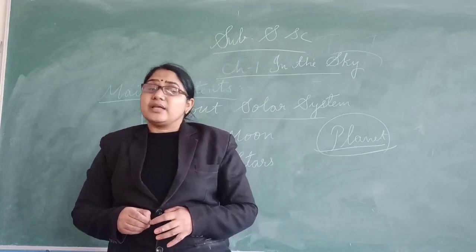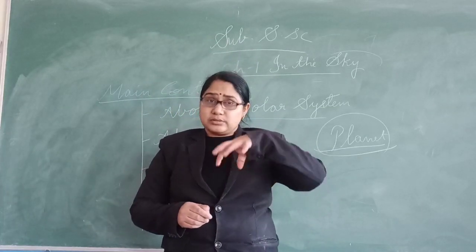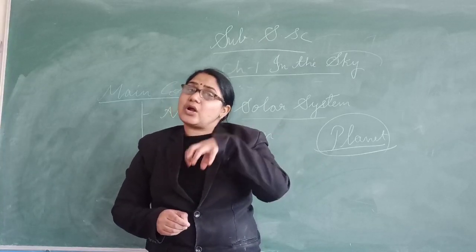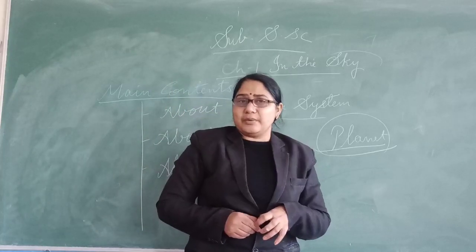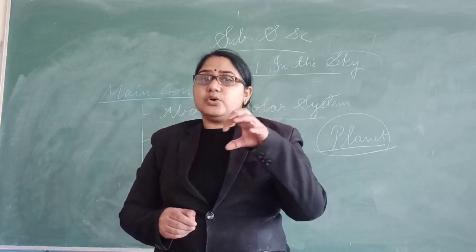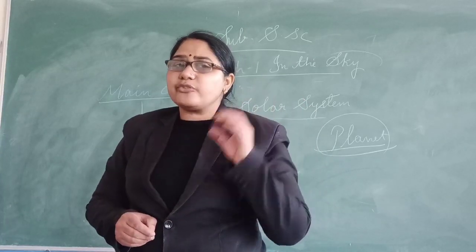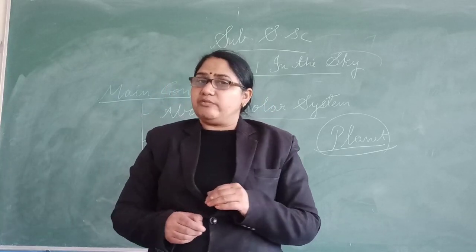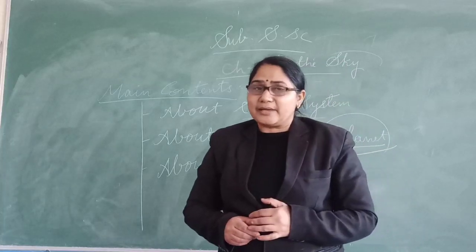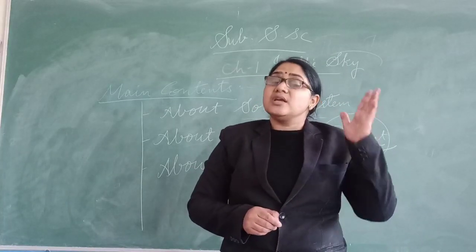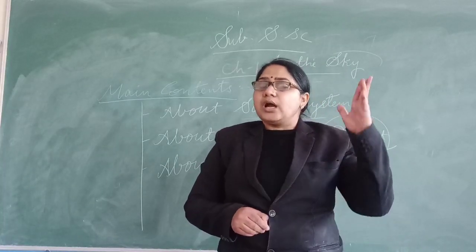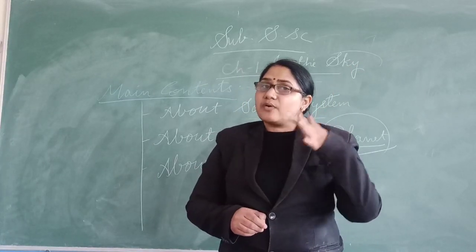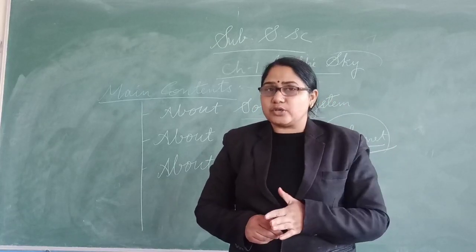A planet is an object that orbits around the sun — that is called a planet. For example, Vika, in which planet do you live? That is Earth. Earth is a planet, and Earth is also known as the blue planet, because most of its surface is covered with water.